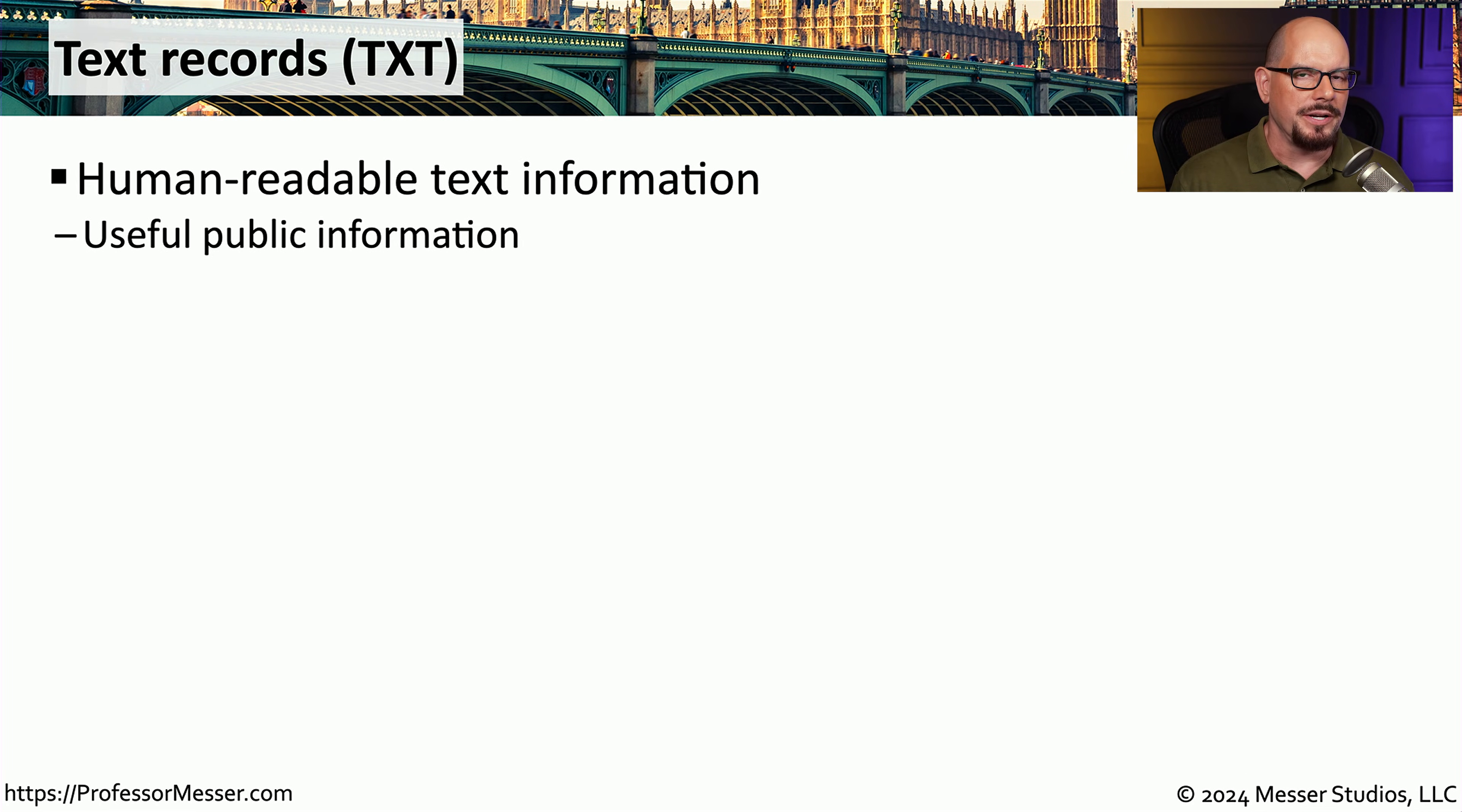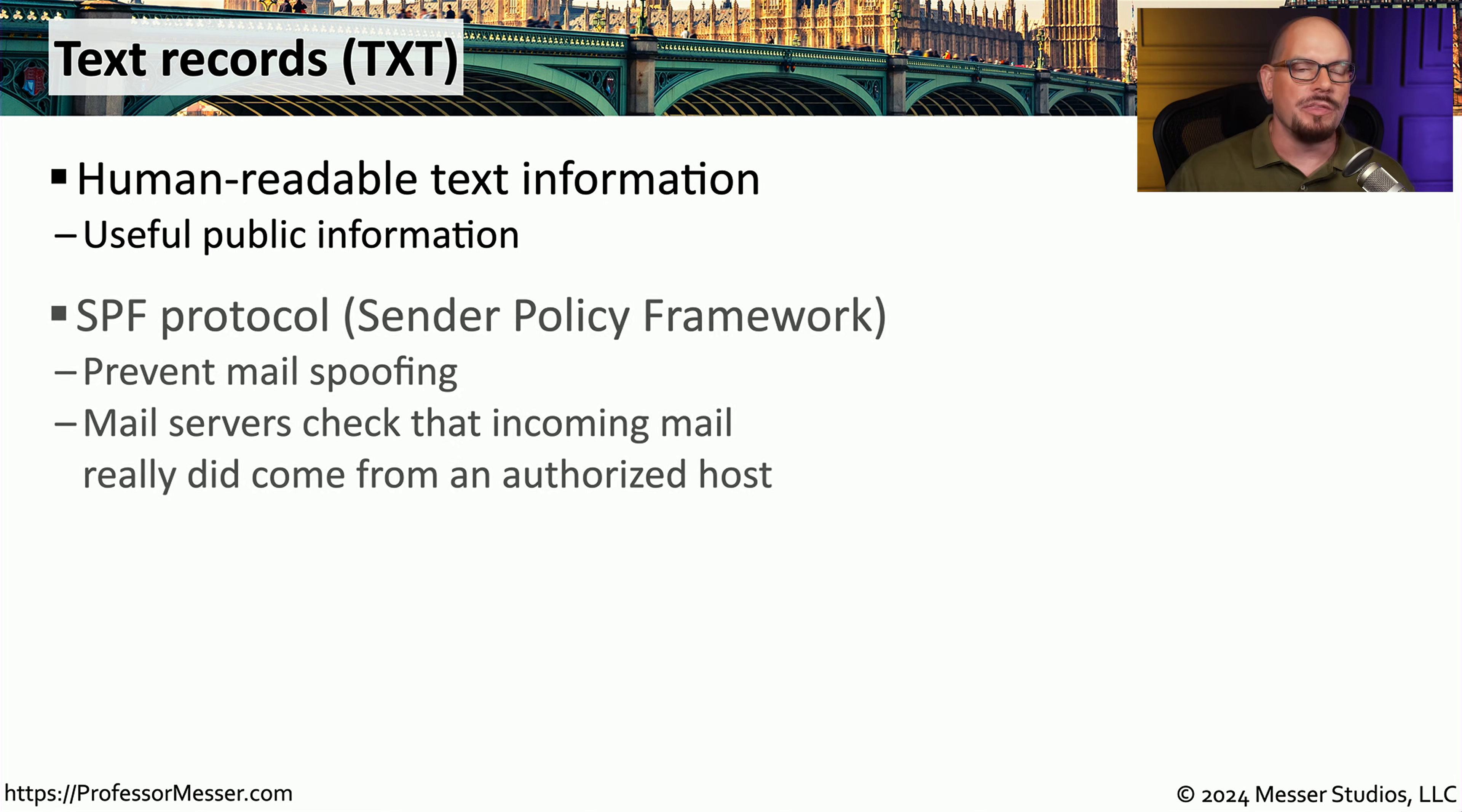Another useful record type on a DNS server is a text record, or TXT record. This provides human-readable text information, and it's used for many different purposes. One of the more common uses of a text record is to configure the SPF information. This stands for Sender Policy Framework, and this is a way that we can tell our DNS server what email servers are authorized to send mail on our behalf. This is to prevent someone else from building their own mail server and sending mail with your name associated with it. The mail servers that receive these email messages will refer back to the SPF record that's contained within your DNS server in a text record, and they will verify if that mail really came from an authorized host.